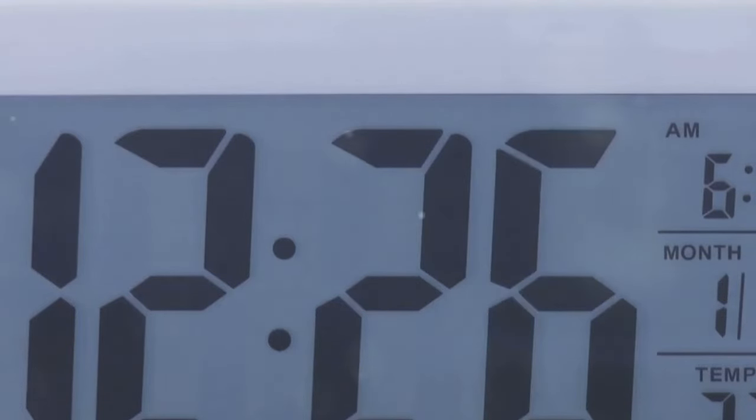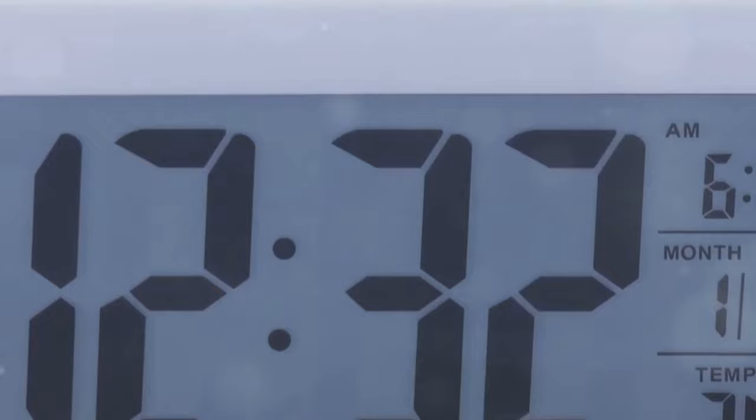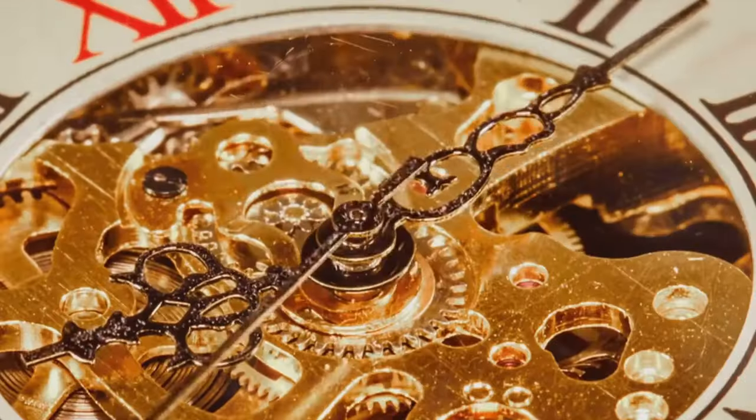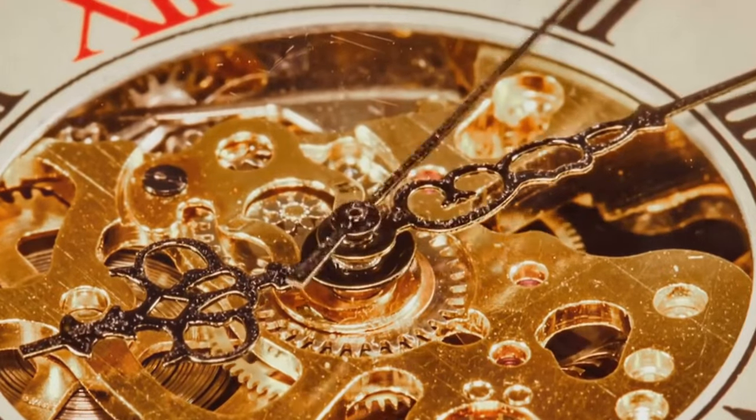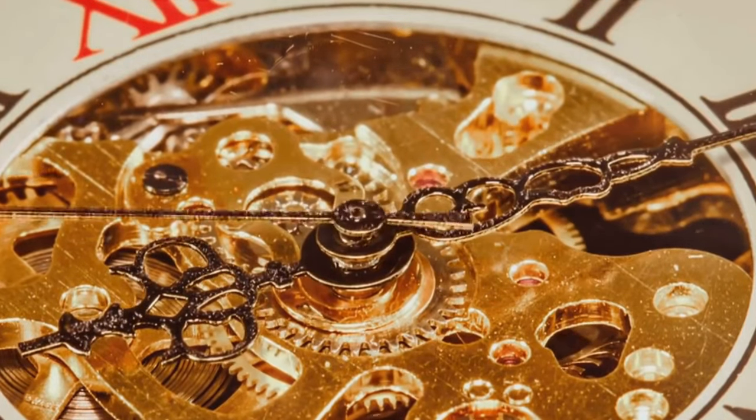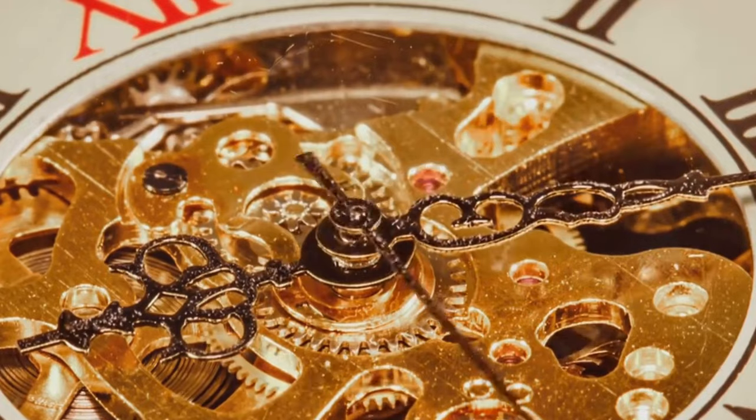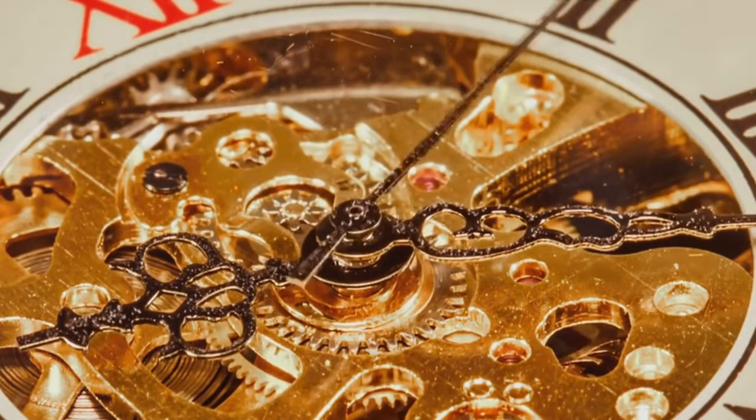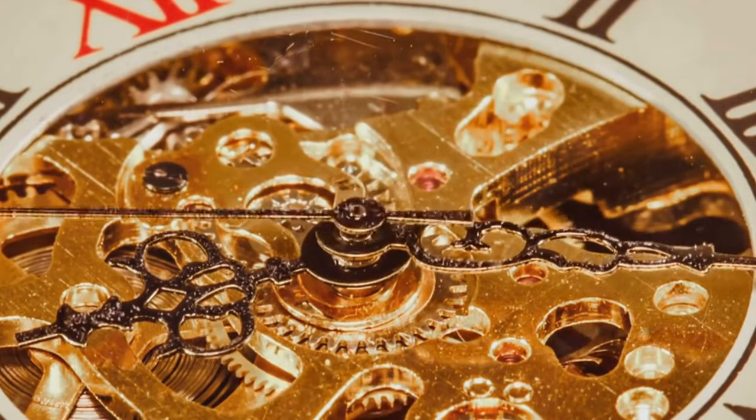Clocks also allow us to explore the fascinating concept of time dilation, a cornerstone of Einstein's theory of relativity. This theory proposes that time can slow down or speed up depending on how fast you're moving or how strong the gravitational field is around you. And it's through precise clocks, such as atomic clocks, that we've been able to experimentally confirm this mind-boggling concept.